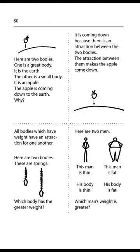Page 80. Here are two bodies. One is a great body — it is the earth. The other is a small body — it is an apple. The apple is coming down to the earth. Why? It is coming down because there is an attraction between the two bodies. The attraction between them makes the apple come down. All bodies which have weight have an attraction for one another.